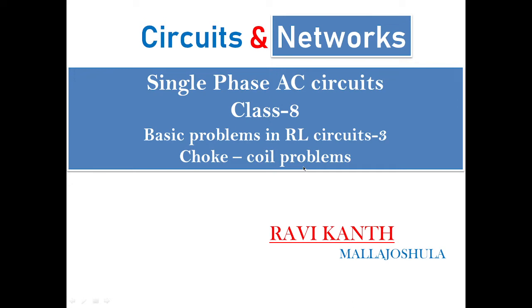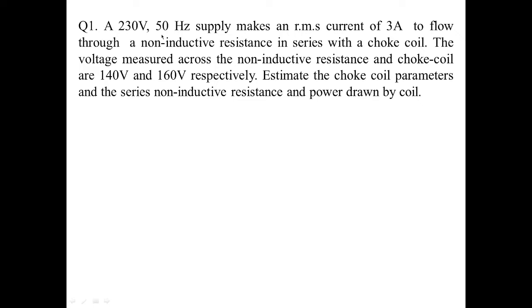So what are these choke coil problems? For example, a 230 volts 50 hertz supply makes an RMS current of 3 amperes to flow through a non-inductive resistance in series with a choke coil. A voltage is applied which makes a current flow through a series combination of resistance in series with a choke coil. This is a problem often asked in different competitive exams as well as in regular semester exams.